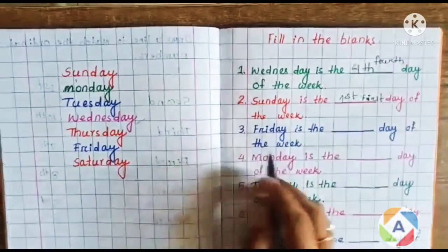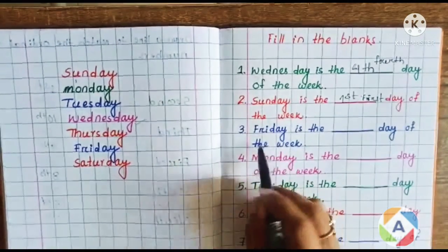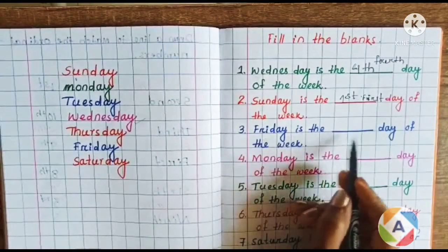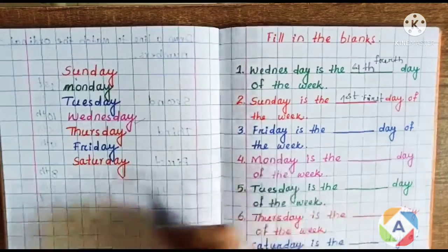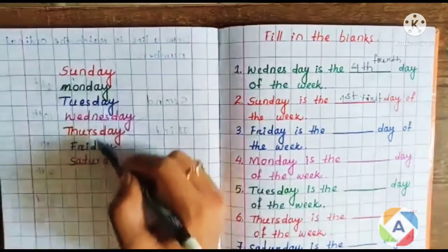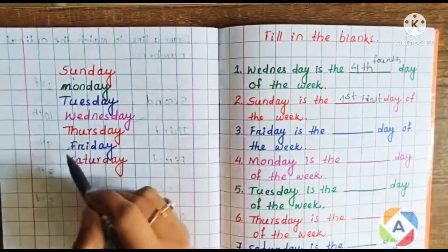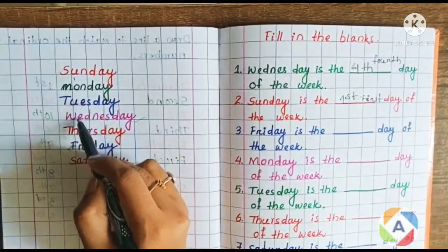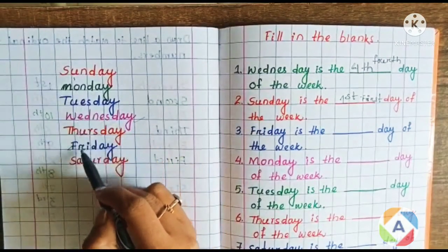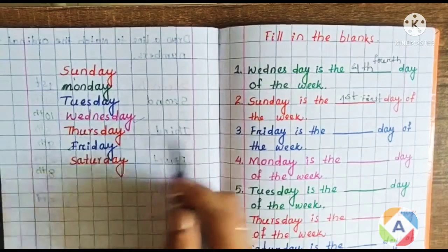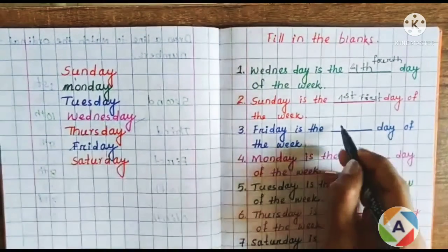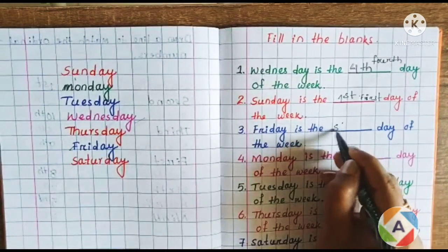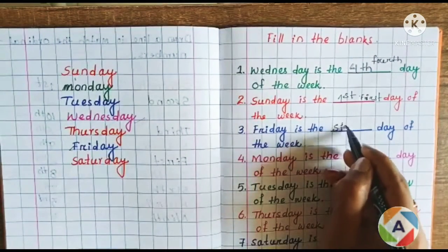Friday is the third day of the week. First, second, third, fourth, fifth, sixth — then Friday is the sixth day. S-I-X-T-H. Okay.